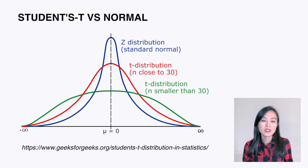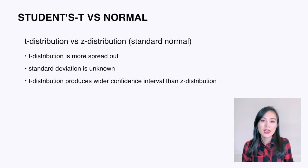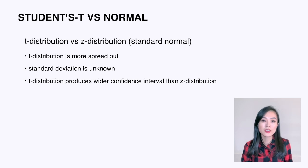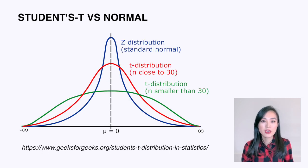We observe that a t-distribution is more prone to error — it's more spread out and thicker in tails than a normal distribution. This makes sense because we do not know the standard deviation of the population. This also means that the t-distribution produces a wider interval than the corresponding standard normal based confidence interval, because if we don't know the standard deviation and we estimate it, we are less certain about our estimate. Note that the shapes are different for n less than 30 and n close to 30.